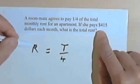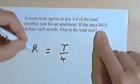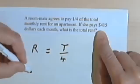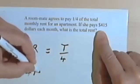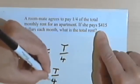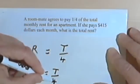Now it also tells me that she pays $415. So the roommate's share of the rent is 415, and that's going to equal T over 4, the total amount divided by 4.